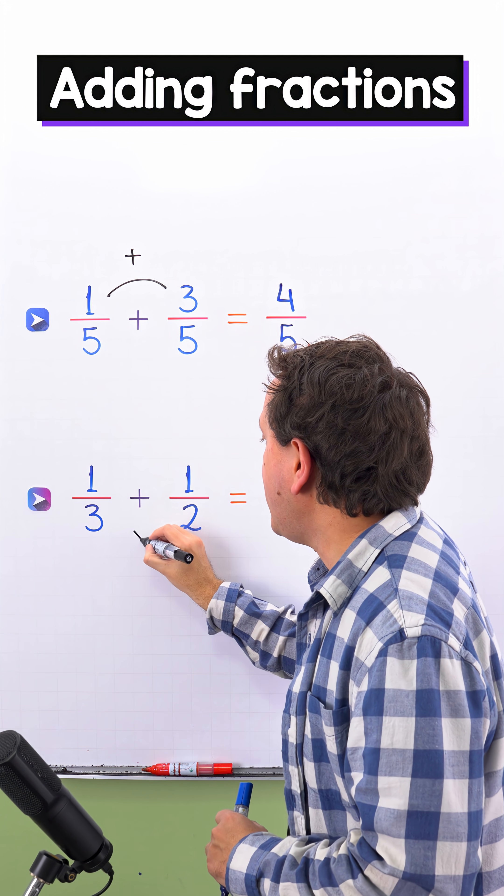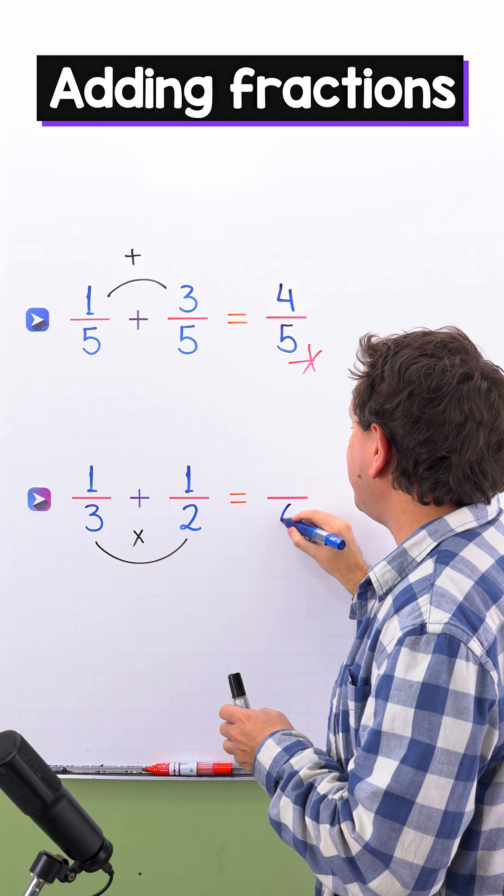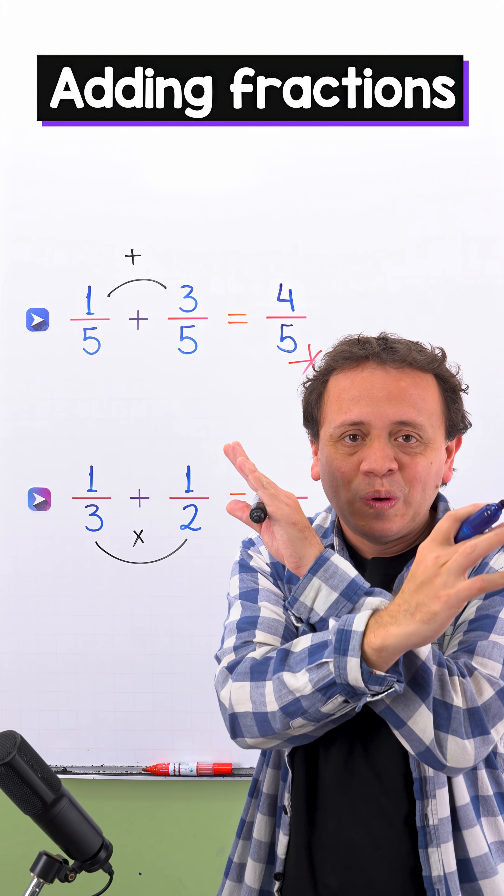First, we're going to multiply the denominators, and three times two give us six. Finally, we just need to cross multiply.